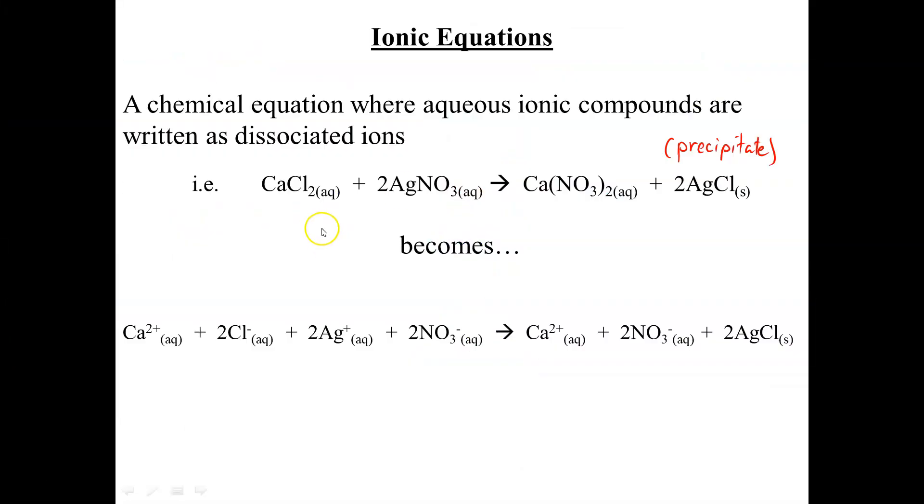So please remember, you must write it as 2 chlorine anions, aqueous, floating around, don't forget the charge. And do not write it as Cl2, because that means something totally different.